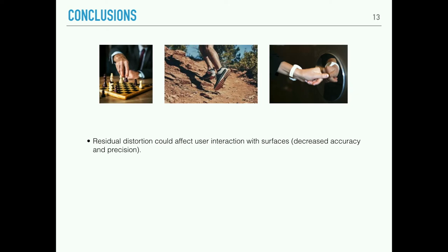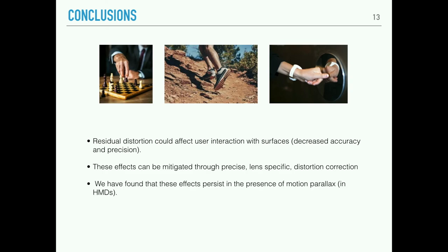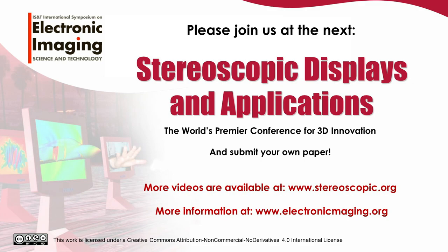In conclusion, residual distortion might affect the way users interact with surfaces in VR — given that people are less accurate and less sensitive to changes in slant when distortion is present, you might expect effects on performance in common VR tasks. These effects can be mitigated through precise lens-specific distortion correction. We have also found that these effects persist when the observer or the world is in motion, which has real implications for actual VR use case scenarios.